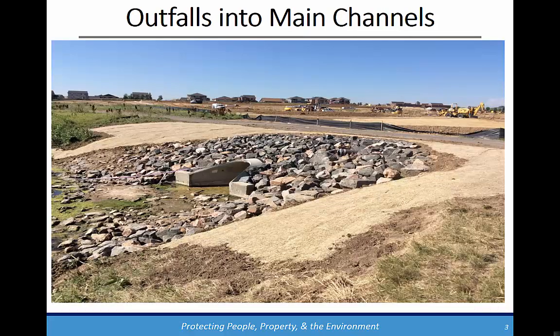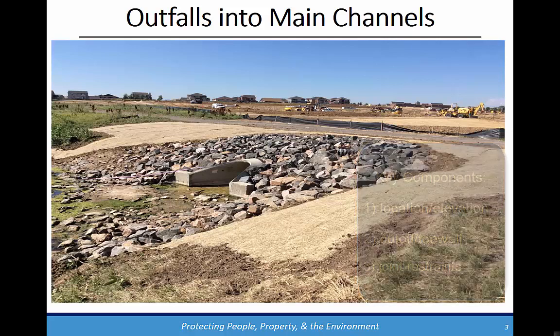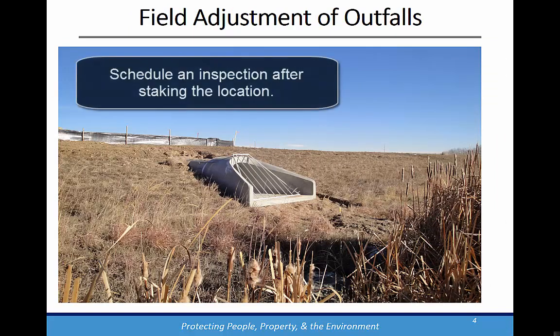Today we'll focus on bank installations as shown in this slide. The important components to key in on are the location and elevation of the flared end section, the cutoff or toe wall, and the joint restraints. It's important that the construction manager or inspector review the construction staking with the contractor before installing the flared end section or last section of pipe.